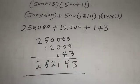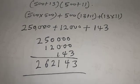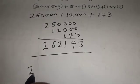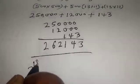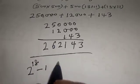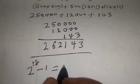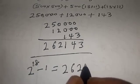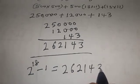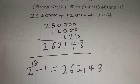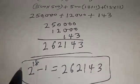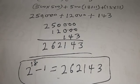So our final answer is: 2 raised to power 18 minus 1, without using a calculator, is equal to 262,143. That is our final answer. If you have enjoyed the class, please don't forget to like, share, comment and subscribe.